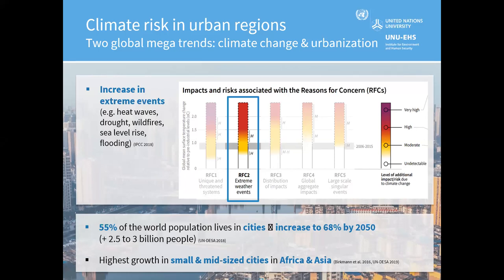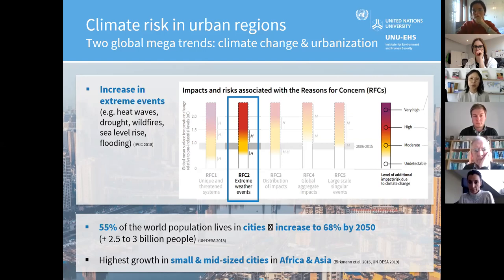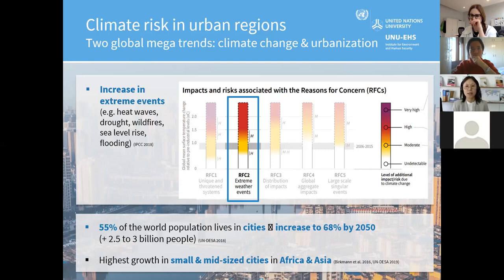This is coupled by another global trend: global population development. Currently 50% of the world population lives in urban areas, and according to projections, by 2050 that figure will be 68% — meaning 2.5 to 3 billion more people living in urban areas. Combining these two trends, the risks in urban areas related to climate will increase because exposure increases due to population growth, with the biggest growth rate taking place in small and medium-sized cities in Asia and Africa.